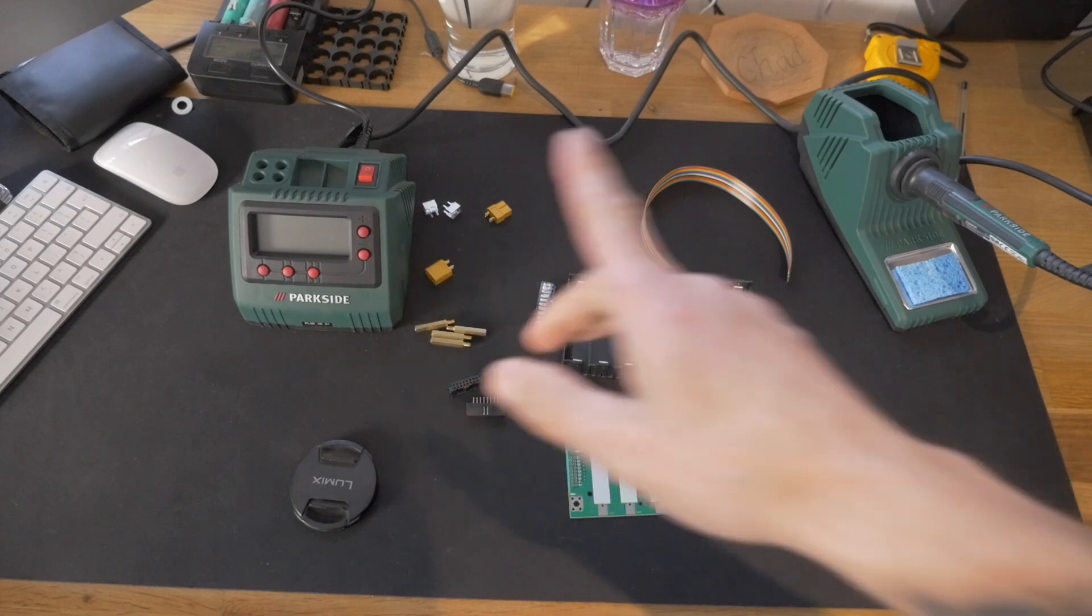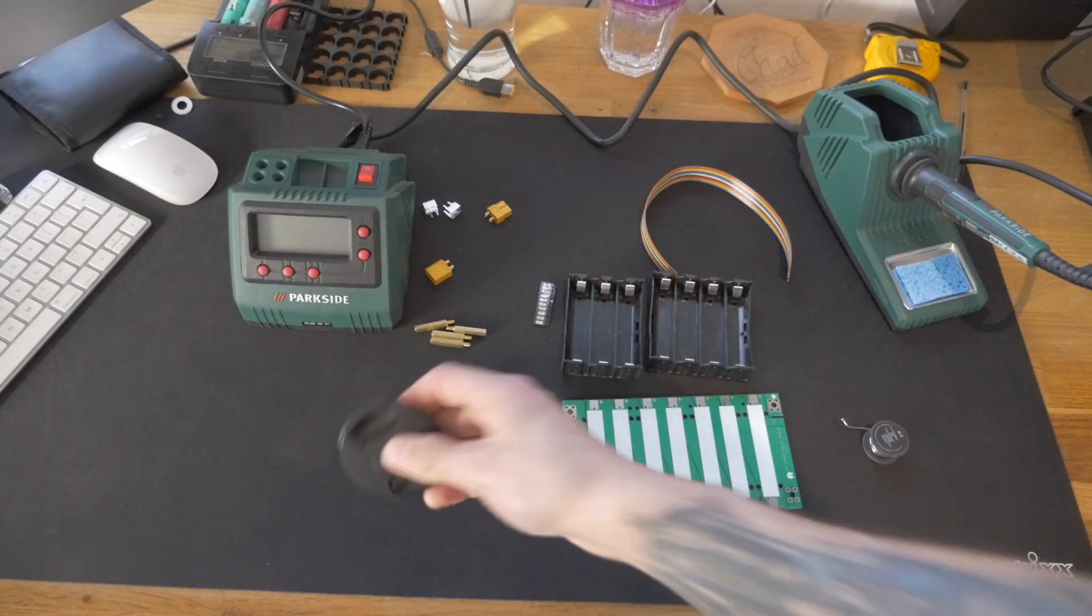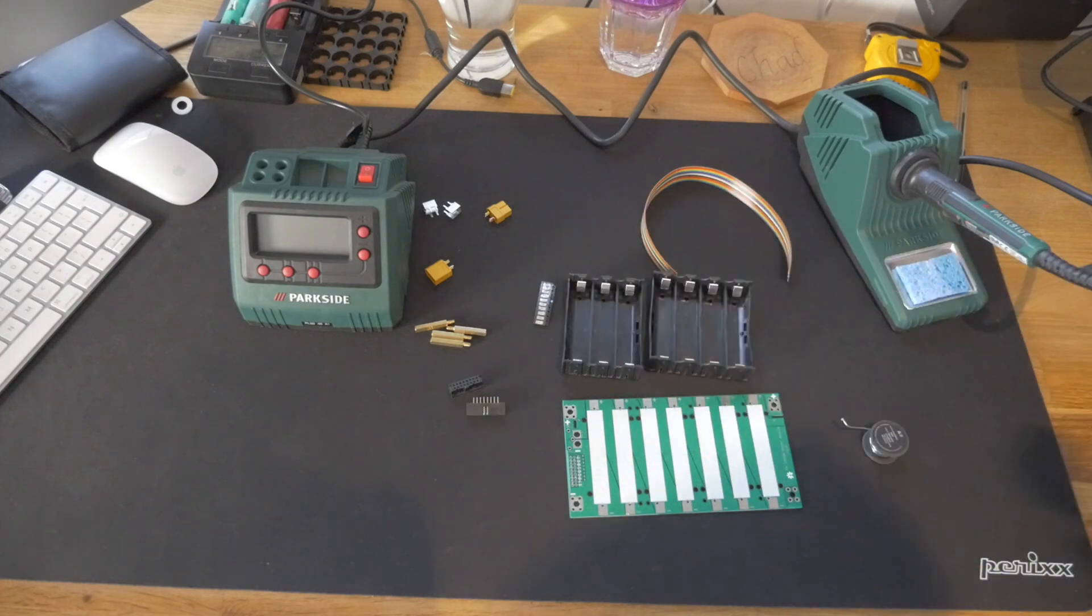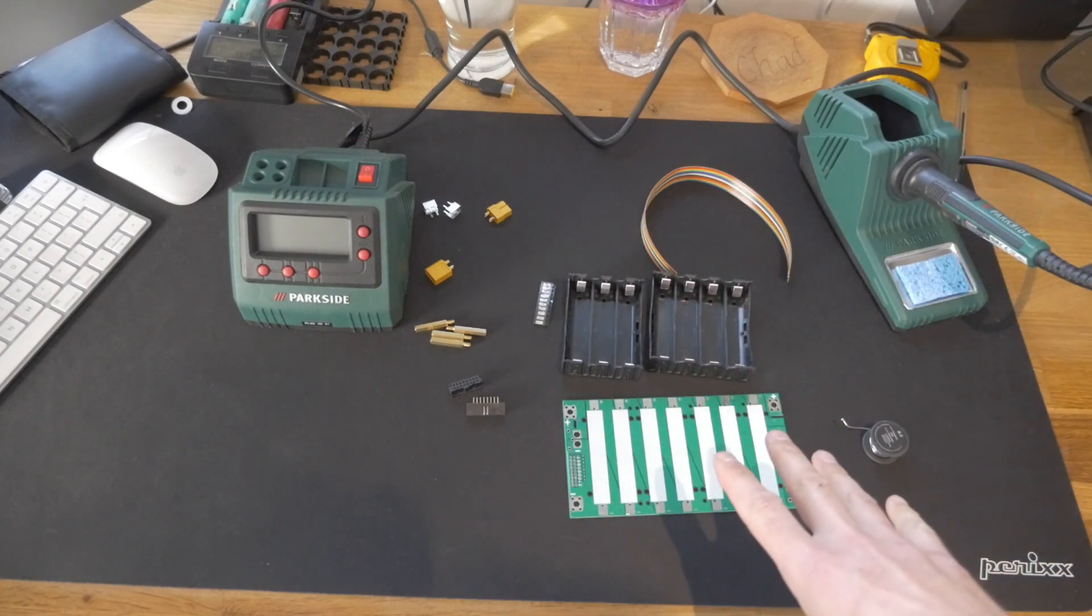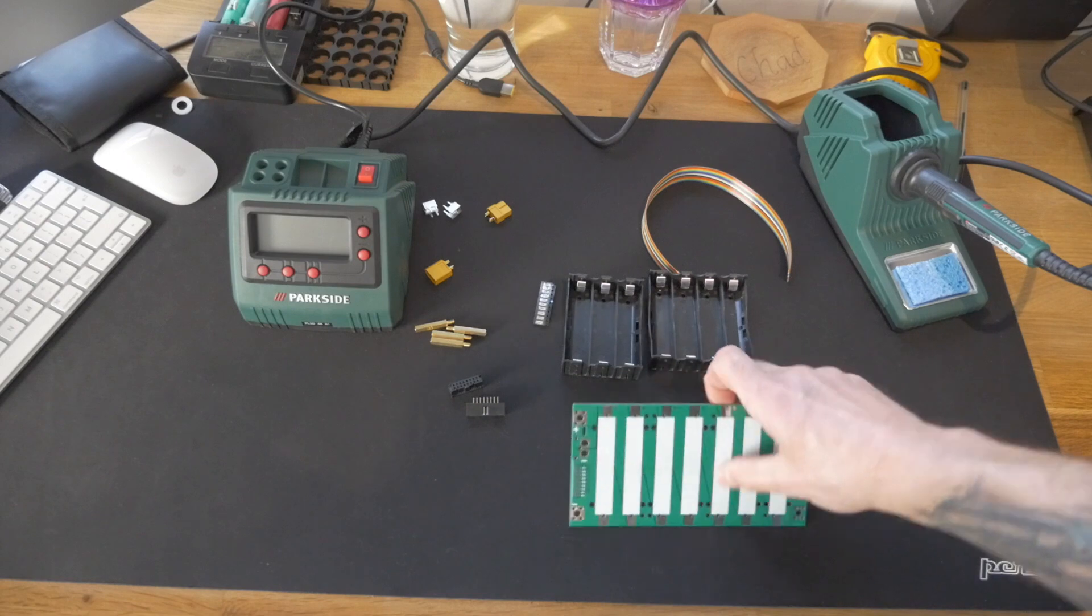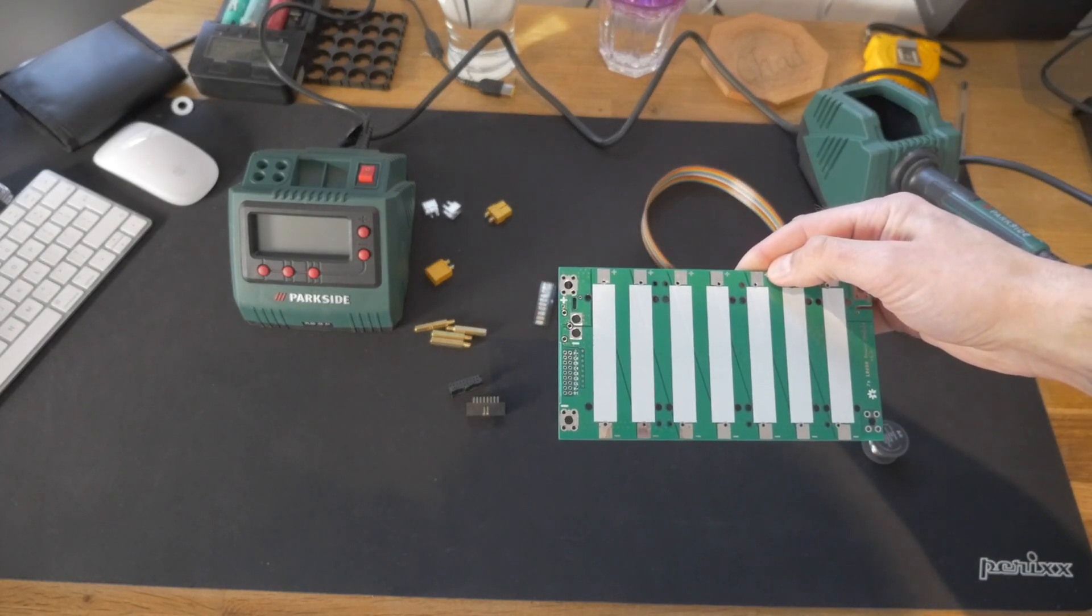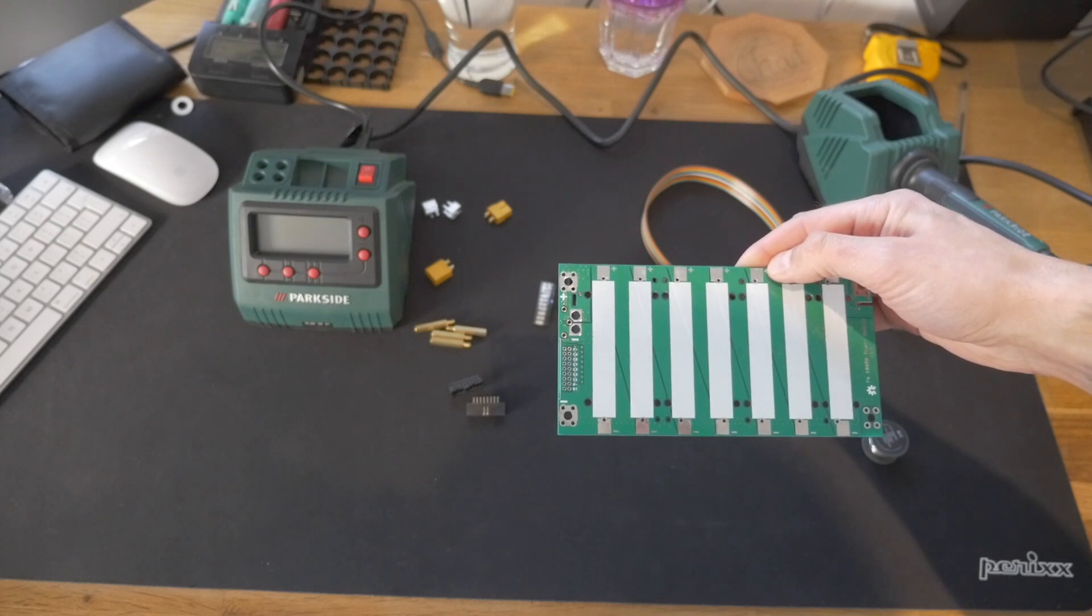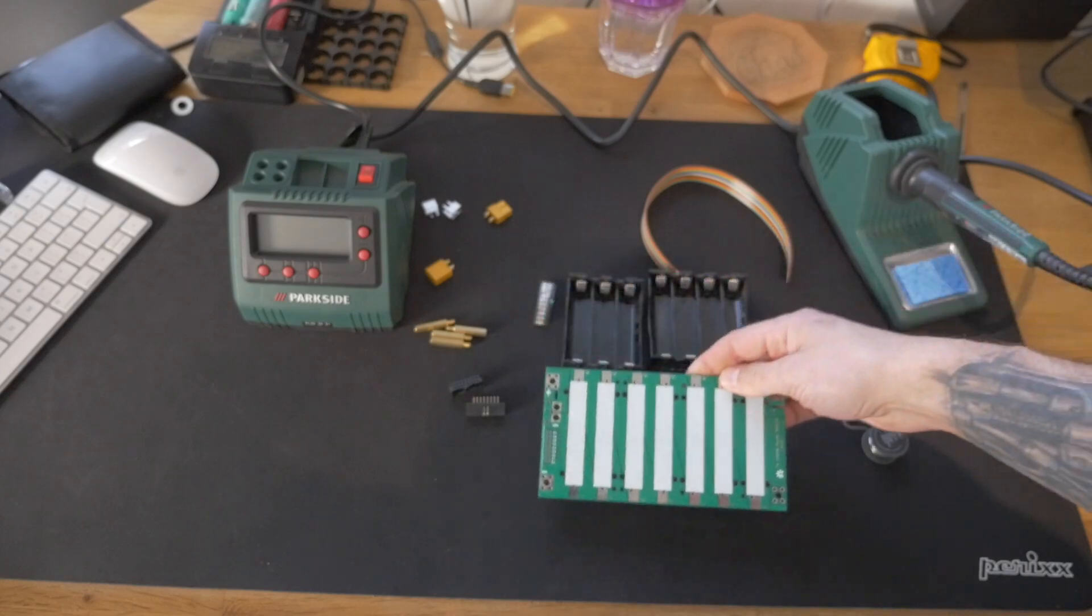These are the XT60 connectors, and these little connectors you can connect wires directly onto them. So that's what you get in the kit. If you remember, we've got the Parkside soldering iron which we reviewed on the last video. What we're going to do now is I'm going to take you through soldering this up, and I repeat, I've not done any soldering before in my life, so this is going to be a bit of an experiment.